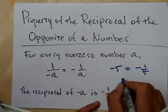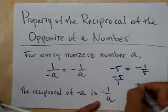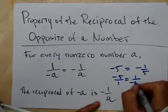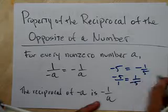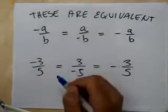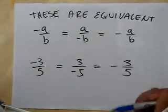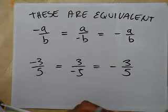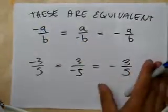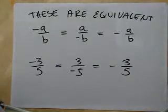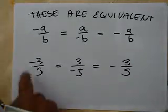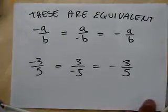Negative 5 is the same thing as negative 5 over 1. When you flip it — find its re-flipperical — there's no need to fuss because negative a over b is the same as a over negative b, or negative a over b. It doesn't matter where the negative sign is — in the numerator, the denominator, or right outside — it all means the same thing. So negative 3/5, 3 over negative 5, and negative 3/5 are all the same.